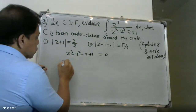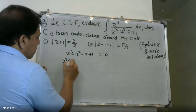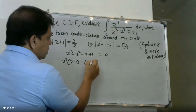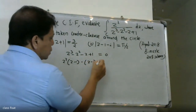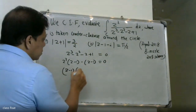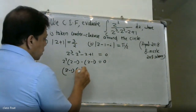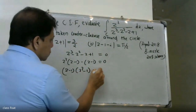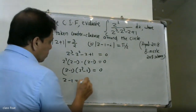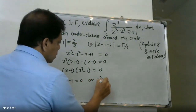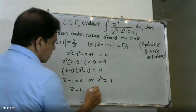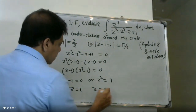Factoring: we take z squared times (z minus 1) minus (z squared minus 1) equals 0, which gives us z squared minus 1 equals 0. Taking z minus 1 as a common factor, we get z minus 1 times z squared minus 1 equals 0.